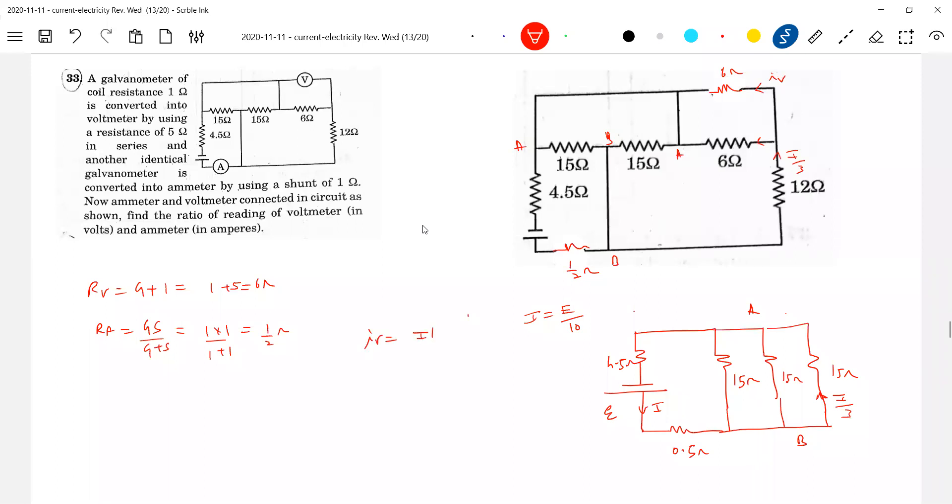IV should be equal to I by 3, resistance of other branch by sum of resistance. I think it should be half of it. That is, what is IV? IV should be equal to I by 6. I decodes to E by 10, E by 60.